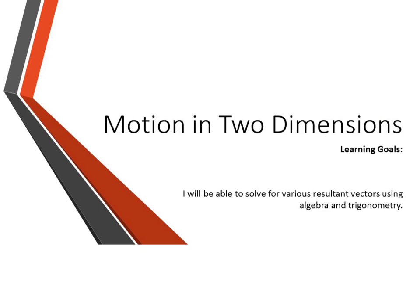So that was it for just looking at our basic two-dimensional vector addition — adding at perpendicular and then breaking it into its components. And in our next video, part two, we're going to look at adding non-perpendicular vectors.